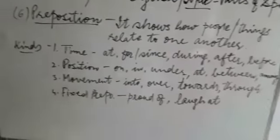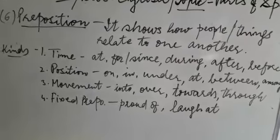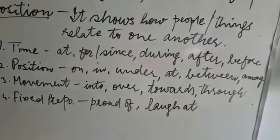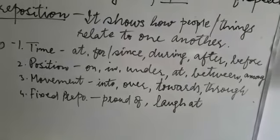Preposition can be divided into groups in this way. Number one, it shows time. For example: at, for, since, during, after, before.